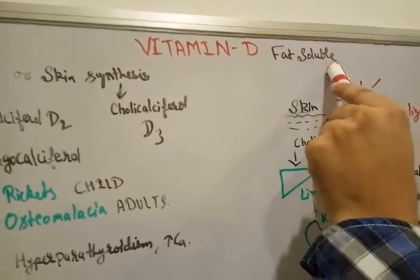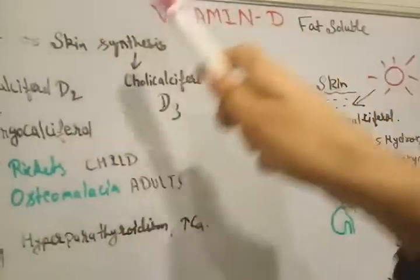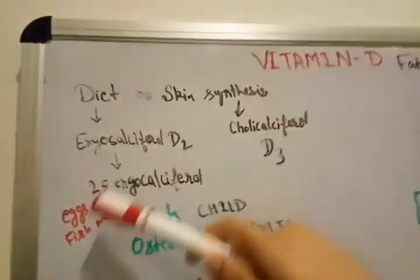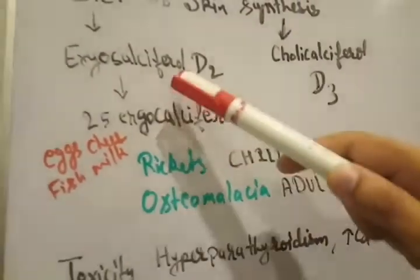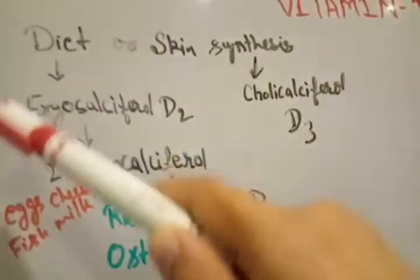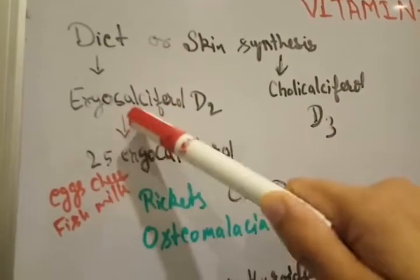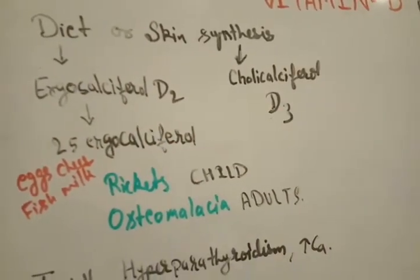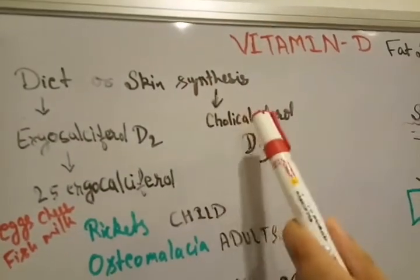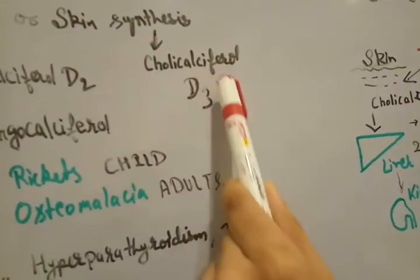Fat soluble, this is known as the fat soluble vitamin D. Vitamin D we can get from diet by our food like eggs, cheese, fish and milk, mainly non-vegetarian. It's in the form of ergocalciferol we can say it's D2, or it converts into 25 ergocalciferol but it must be found in skin in the form of cholecalciferol, in the form of D3.